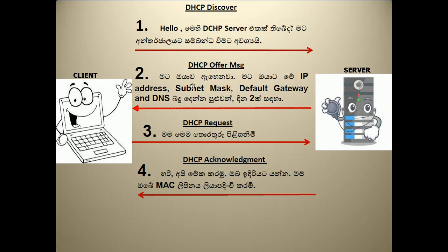When the IP address is found, the default gateway and DNS are included. The client can then receive the IP address. The server sends a discover message to the client, and the client sends a request back.